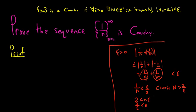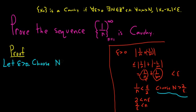Let's write the formal proof. By the way, the reason we can do this is called the Archimedean property. We start the proof by letting epsilon be greater than 0. By the Archimedean property, we can choose a natural number N bigger than 2 over epsilon.